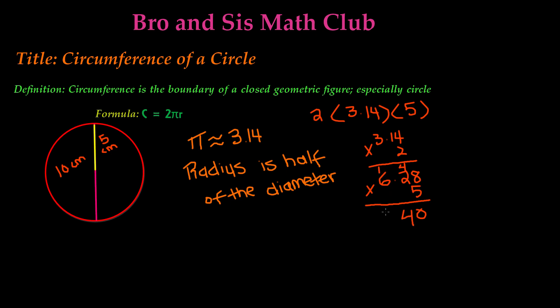6 times 5 is 30, plus 1 is 31. And bring down the period, or the decimal point, and we get 31.4.